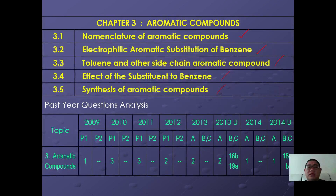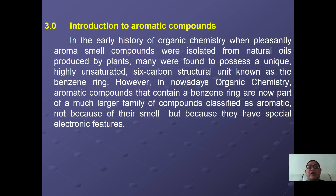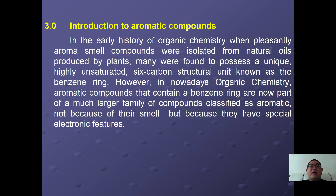Let's begin with the introduction. In early history of organic chemistry, pleasantly aromatic-smelling compounds were isolated from natural oils produced by plants, and many were found to possess a unique highly unsaturated 6-carbon structure unit also known as the benzene ring. However, in modern organic chemistry, aromatic compounds that contain the benzene ring are now part of a much larger family, classified as aromatic not because of their smell but also due to their special electronic properties.